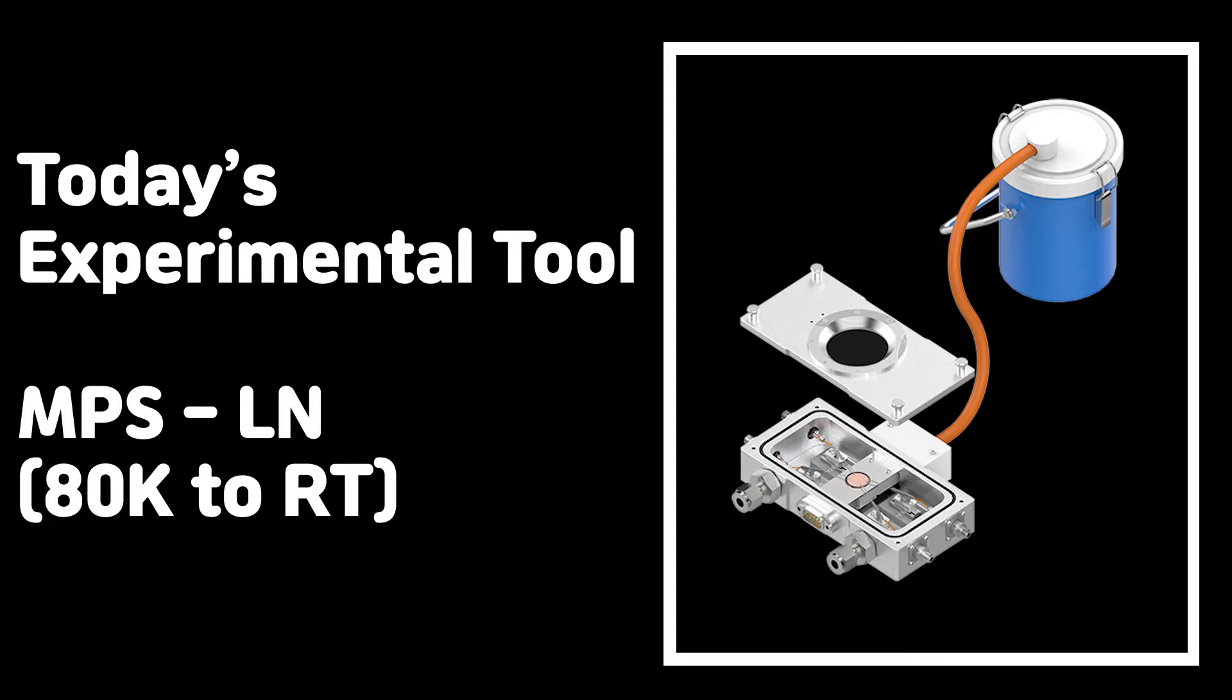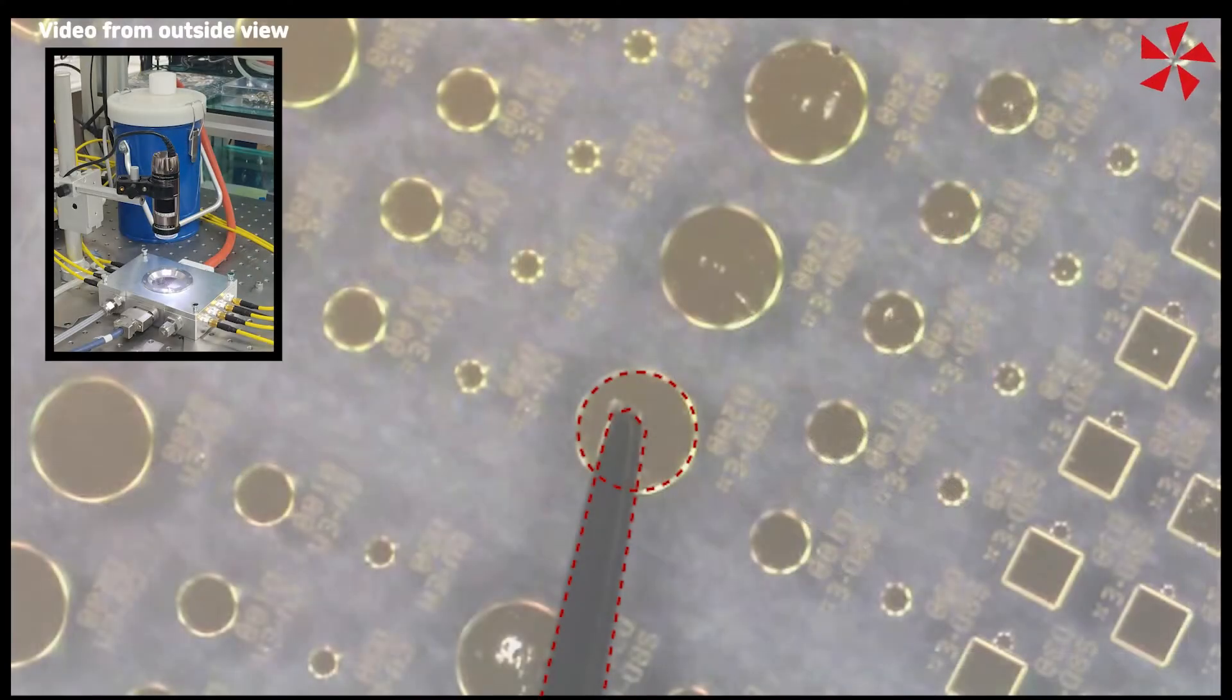The experimental chamber will be NPS-LN2 model which has a temperature range of 80 Kelvin to room temperature. It first runs from 80 Kelvin then to room temperature.